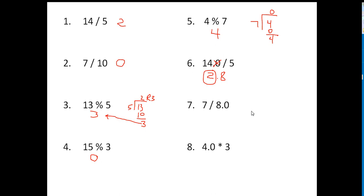Number 7 is an int divided by a double, and a double means that your answer has to be a double. If you do this in the calculator, 7 divided by 8.0 gives you 0.875, and again, if you didn't have the 0.0 here, the answer would be 0, because it would have to be an int. Number 8: you have a double times an int, so the answer has to be a double, so you can't just put 12, because 12 is an int — it's going to be 12.0.